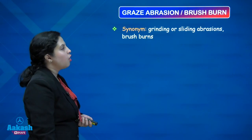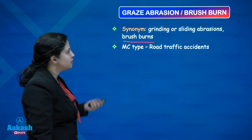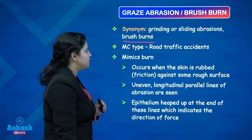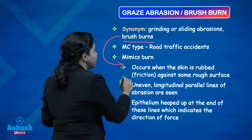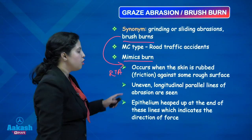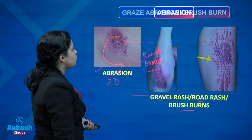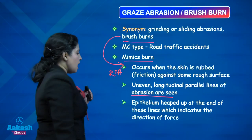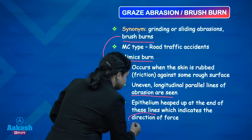Graze abrasion, or brush burn — grinding, sliding, or brush burns. Why do we call it brush burns? It mimics an injury of burn. It occurs when the skin is rubbed with friction against a rough surface, commonly in road traffic accidents. Uneven longitudinal parallel lines of abrasion are seen, and epithelium is heaped up at the end of these lines, which indicates the direction of force.